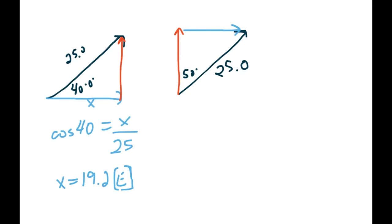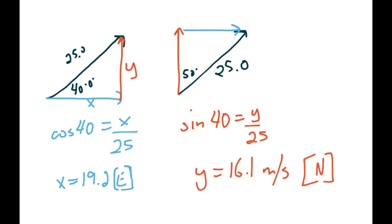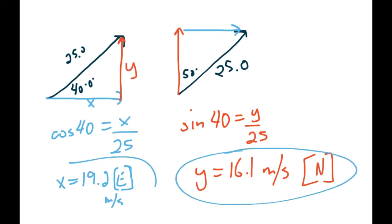Then do the same for the y component - the vertical component. Sin 40 equals y over 25, cross-multiply those, and for y we get 16.1 meters per second. That one is going north. So 19.2 meters per second east and 16.1 meters per second north - those would be your two answers, which is all you have to do for the question.